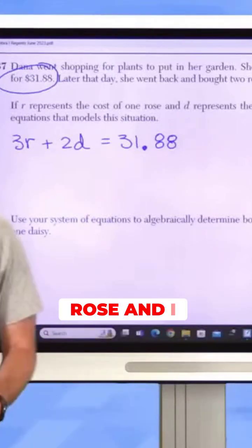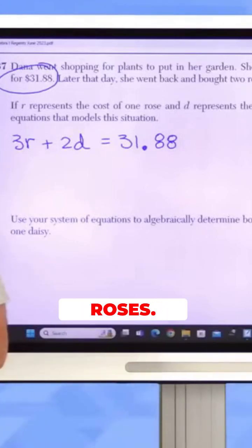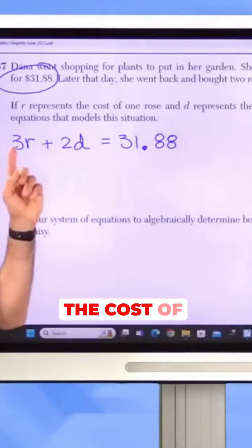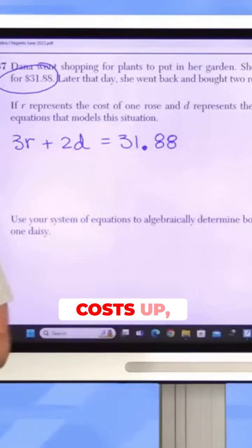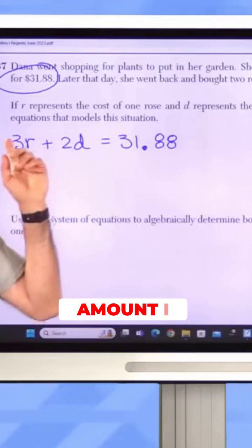If I take the cost of one rose and I multiply it by three, I get the cost of three roses. And if I take the cost of one daisy and I multiply it by two, I get the cost of two daisies. And then when I add those two costs up, I get the total amount I spent.